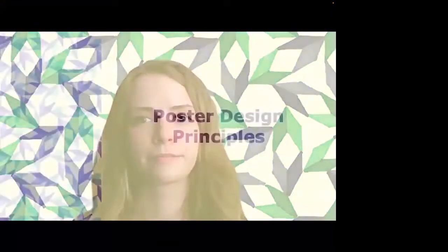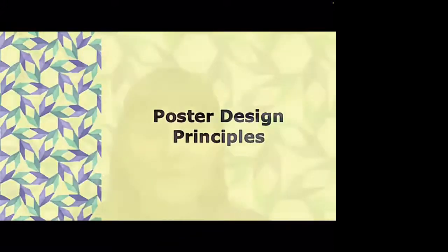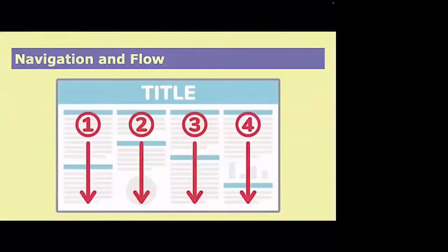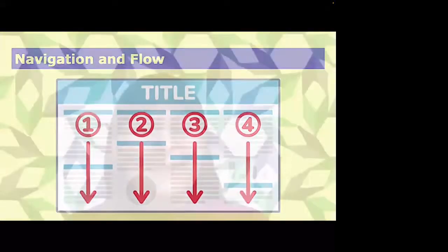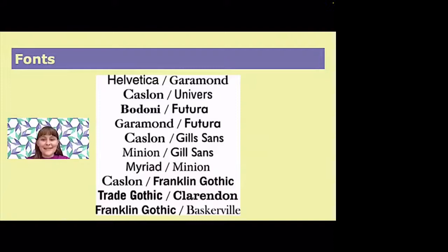In this section of the Math for All poster workshop video series, we will be talking about how to design a poster. First, basic design principles. People read top to bottom, left to right, so most posters have several columns. In column one: intro, background, and motivation. Column two: methods. Column three: results, conclusion, future work, and references. If you are not standing by your poster, a stranger should be able to tell what order it should be read in. Do not use more than two font types, and try to use professional fonts — no Comic Sans.